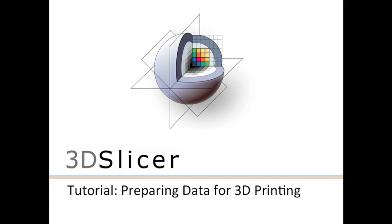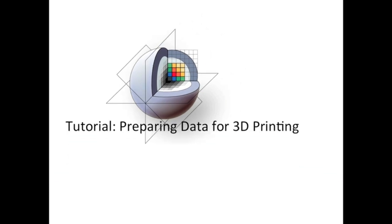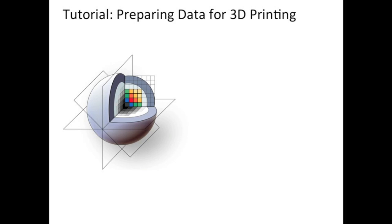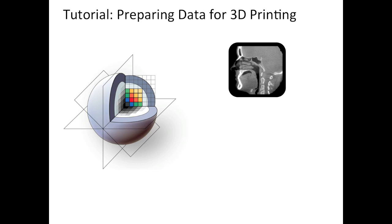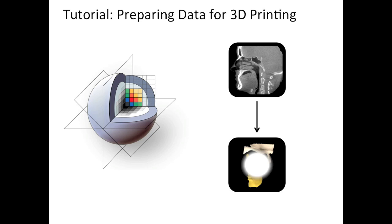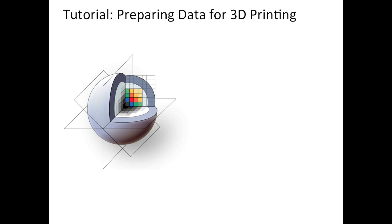During this tutorial, I'm going to highlight just a few features that exist within Slicer, but you can explore other capabilities using the Slicer wiki, and I'll place a link to that in the description box below the video as well. The purpose of this tutorial is to prepare data for 3D printing. I'll begin with a cone beam CT that a patient had done after dental surgery, and I'll end with a 3D printed model of that patient's left temporomandibular joint. I'll break this workflow up into six key steps.